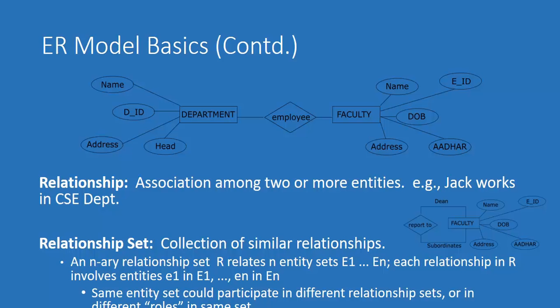Now, ER model basics — relationships. An association among two or more entities is called a relationship. For example, department and faculty are two different entities, and there is a relationship between them: the faculty is an employee of the department. A relationship set is a collection of similar relationships. For example, if five faculties belong to five different departments, there are five connections — these five are called the set of employee relationships.